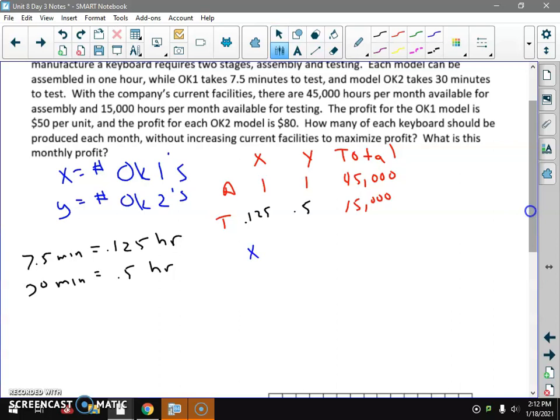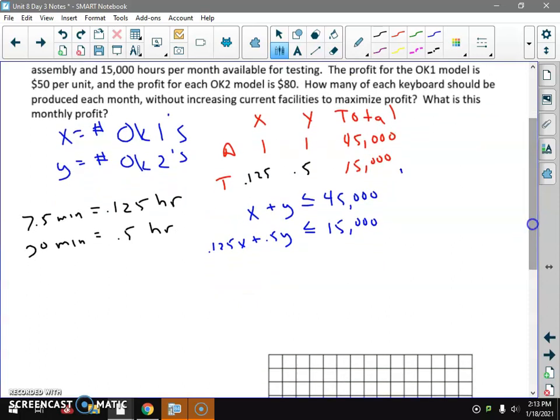Now let's create our inequalities. We have X plus Y is less than or equal to 45,000, because that's the maximum that we have for hours available. And 0.125X plus 0.5Y is less than or equal to 15,000, how many hours max available. If we use that X-intercept, Y-intercept method, pretty easy here. X-intercept, Y-intercept: 45, 45. I'm going to label by the thousands on my grid. X-intercept, Y-intercept: 15,000 divided by 0.125 is 120,000, and divided by 0.5 is 30,000.